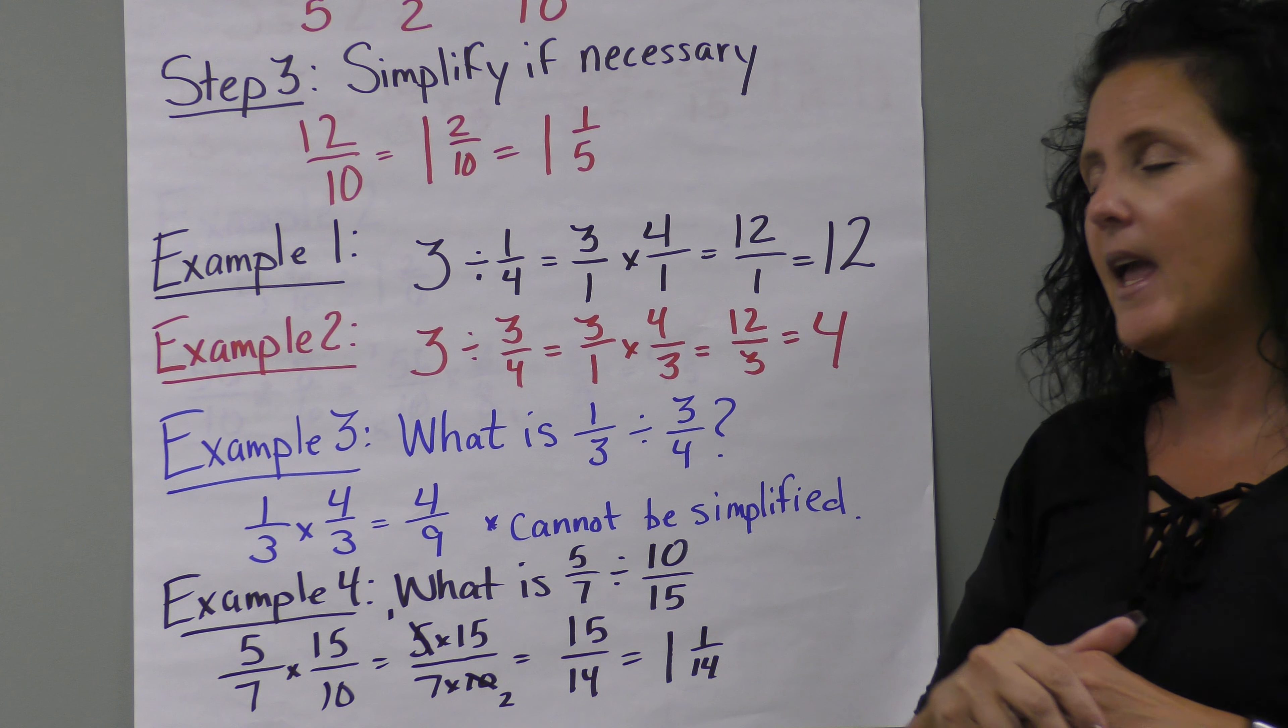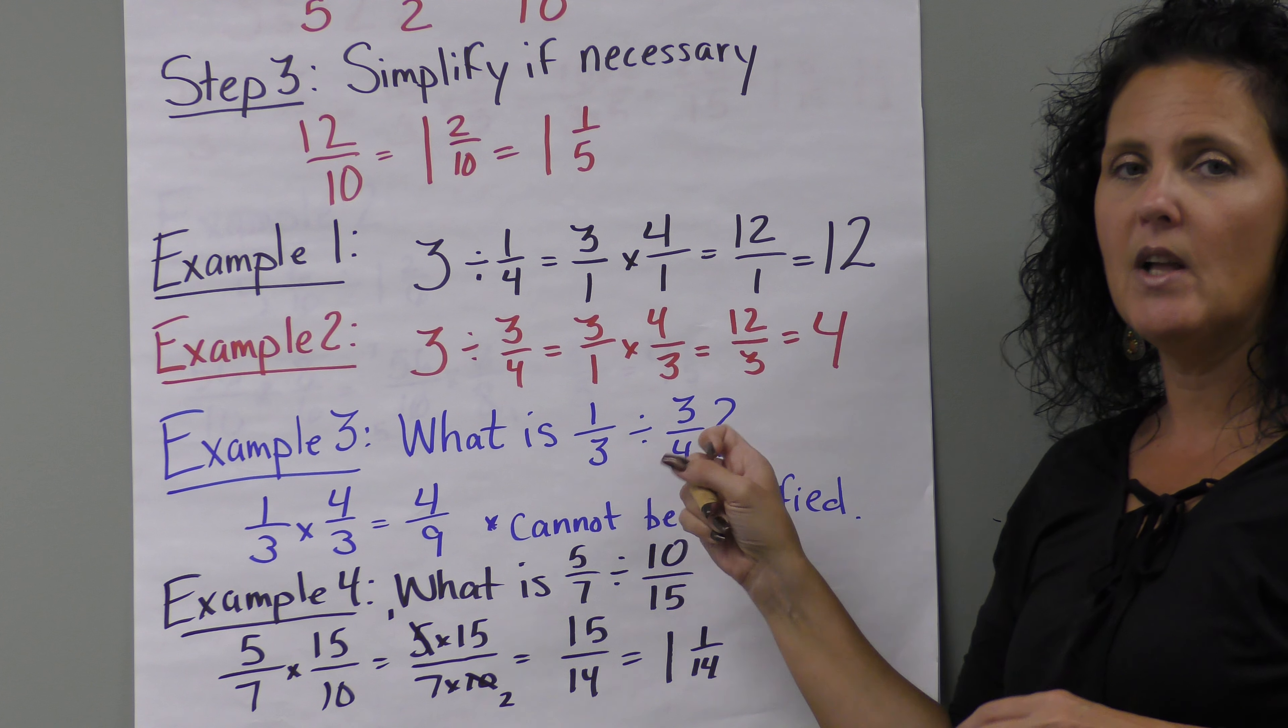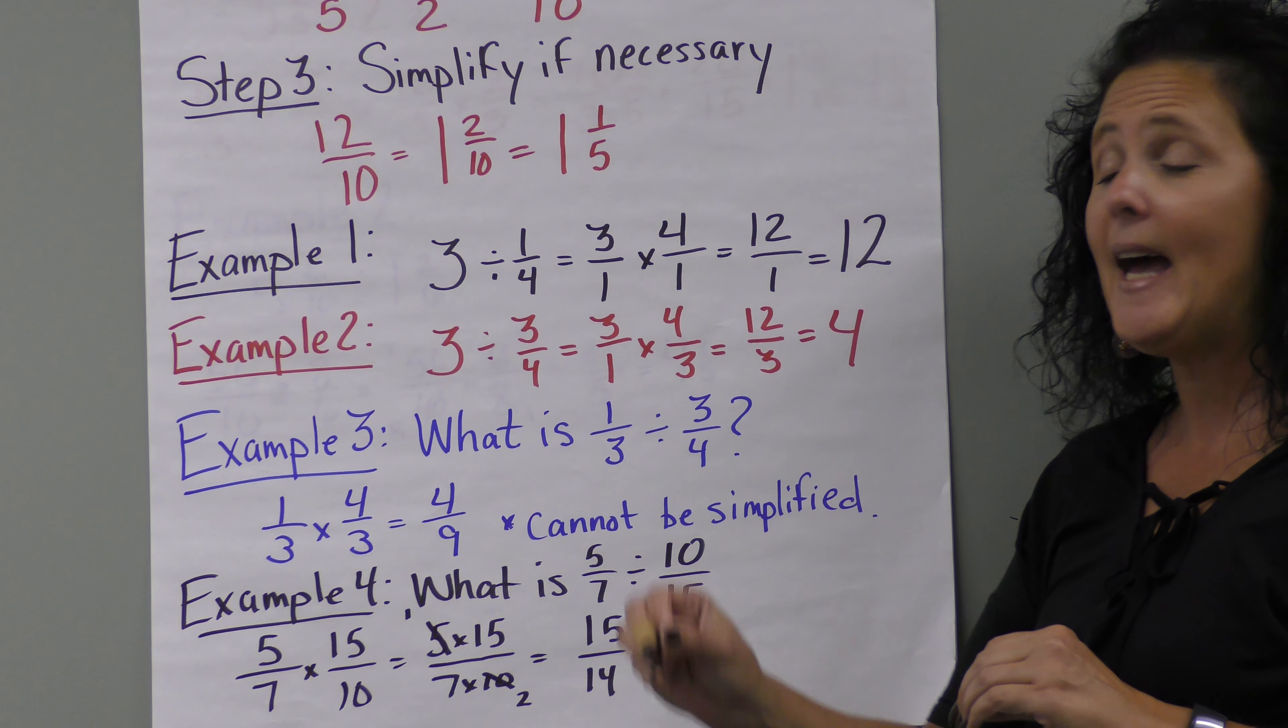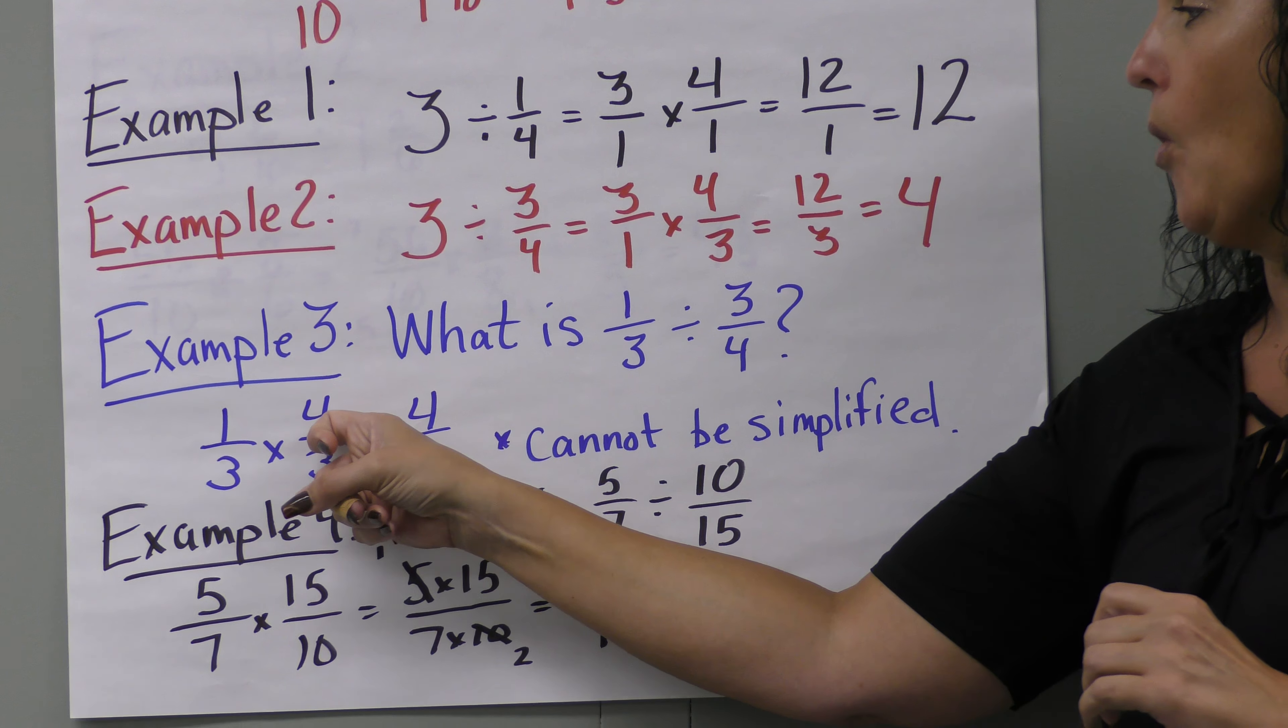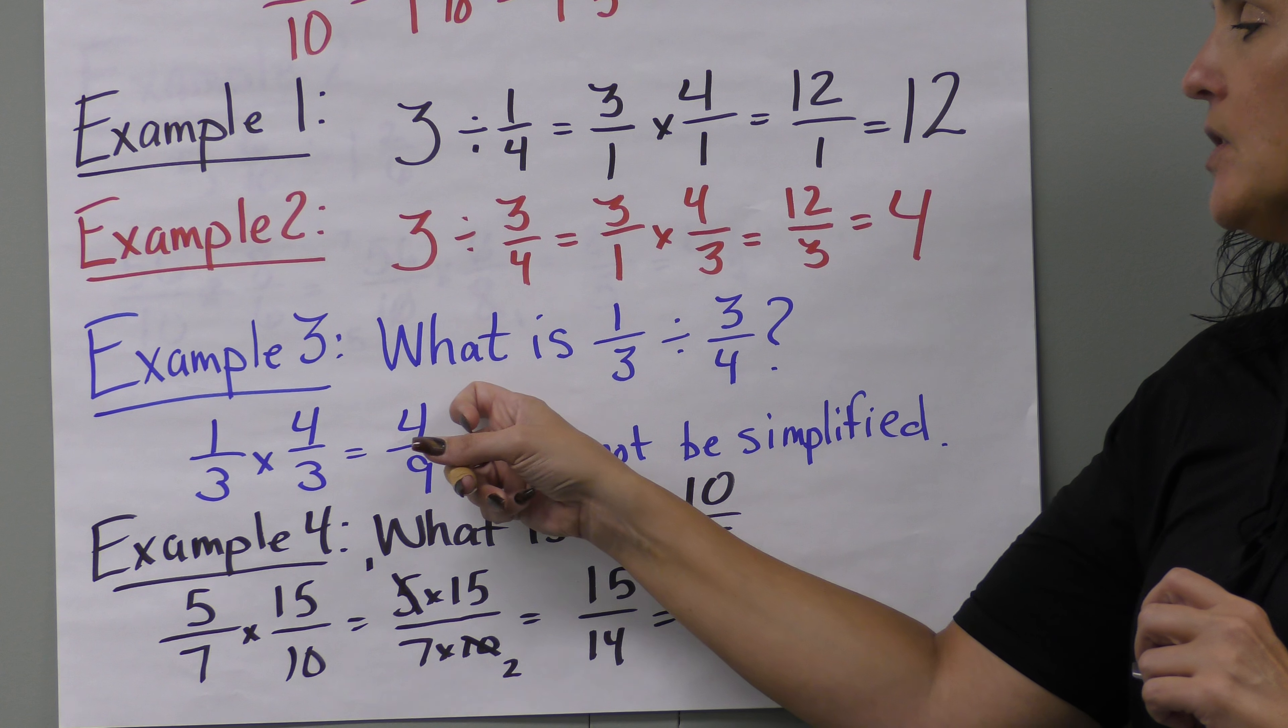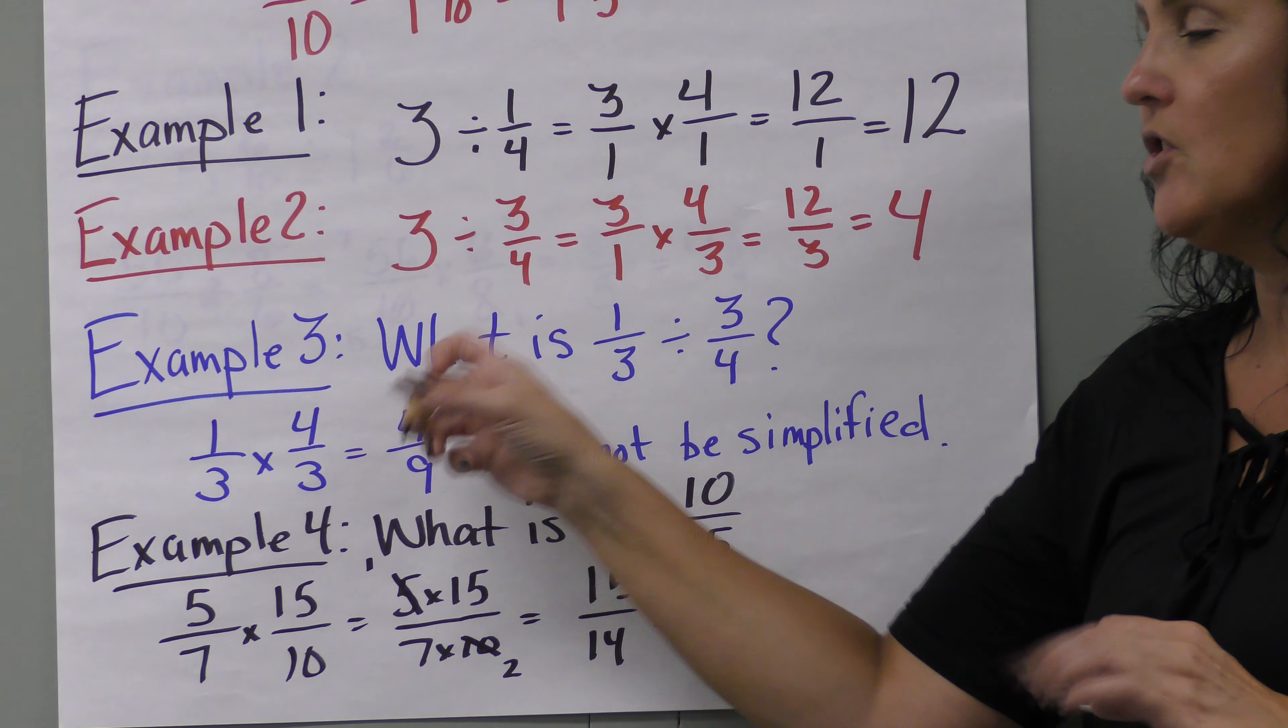Example three uses two fractions. What is one-third divided by three-fourths? Go back to step one: invert the fraction we're dividing by. We have one-third, and we invert three-fourths to four-thirds. Then multiply: one times four is four, three times three is nine. Our answer is four-ninths. This cannot be simplified—it's already in its simplest form.